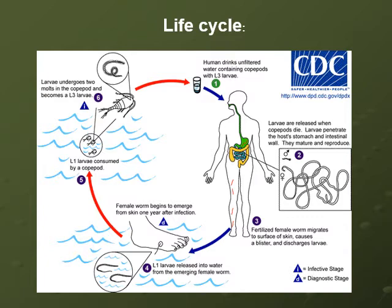The intermediate host is Cyclops and other copepods present in fresh water. The infection occurs when a human being drinks water containing infected Cyclops. The larvae penetrate the host's stomach and intestinal wall, then mature and reproduce in the coelomic areas of the peritoneum. The fertilized female worm migrates to the surface of the skin, causes a blister, and discharges larvae from this blister when it comes in contact with water. The larvae are engulfed by Cyclops and grow into second and third stage larvae, which give infection to men.